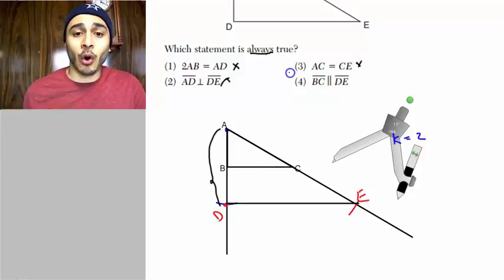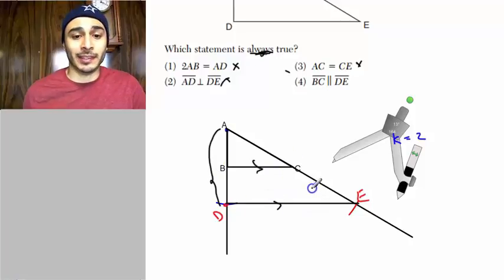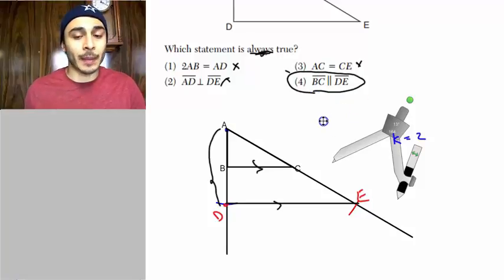Now this will always be true, right? And that's what we're looking for, that BC will always be parallel to DE. So BC will always be parallel to DE. And then that's the answer. The answer is option 4.